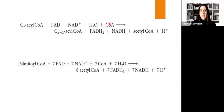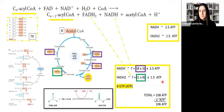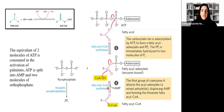Here is the overall reaction for the oxidation of palmitic acid. Specifically for palmitoyl-CoA, we use seven FAD, seven NAD+, seven CoA, and seven molecules of water, producing eight acetyl-CoA, seven FADH2, and seven NADH plus seven H+. We will go through the stoichiometry of these reactions and understand where the energy production is coming from, what NADH and FADH2 each contribute. We must also remember that ATP is consumed when we activate the fatty acids.